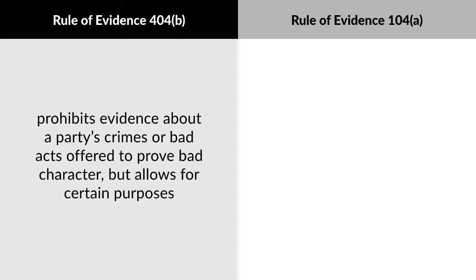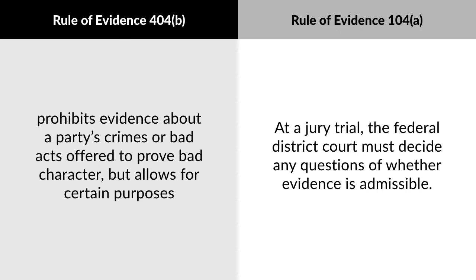Rule 104a provides that, at a jury trial, the federal district court must decide any preliminary question about whether evidence is admissible.